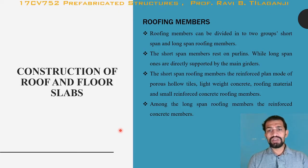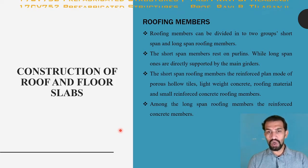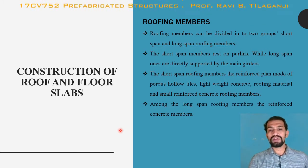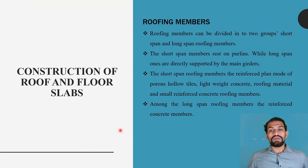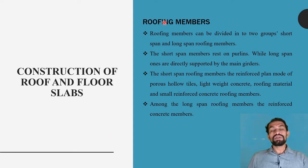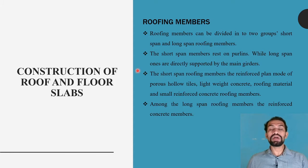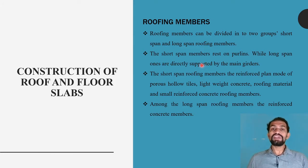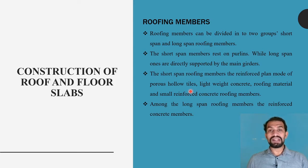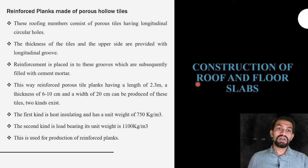Short span roofing members include reinforced planks made of porous hollow tiles, lightweight concrete roofing materials, and small reinforced concrete roofing materials. Among the long span roof members, reinforced concrete members work more efficiently. Roofing is similar to RCC slabs but differs in support: roofing members are supported by purlins and girders, which may be steel joists, prefabricated RCC joists, or concrete joists.